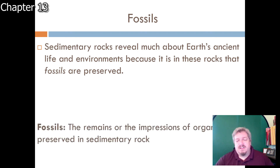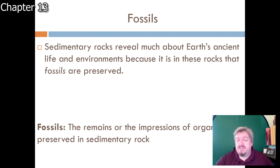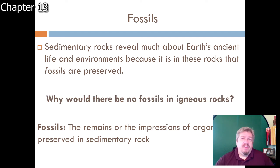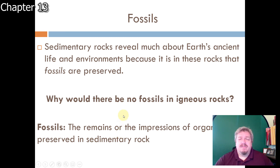Another thing found in sedimentary rock - though not itself a rock - is fossils. A fossil is the impression or remains of life - a bone, a plant, or other organism - preserved in sedimentary rock. Most of what we know about ancient history of life comes from fossils, and they are always found in sedimentary rock. There are no fossils in igneous rock because igneous rock forms from liquid molten rock - anything buried in it would be incinerated. With sedimentation, organisms are simply buried and compressed over time.